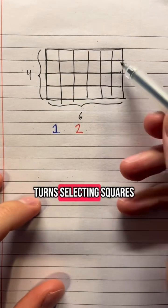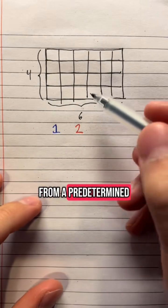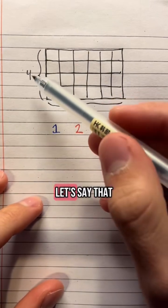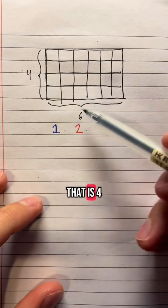Two players take turns selecting squares from a predetermined grid size. So for example, let's say that we choose to have a grid that is four by six.